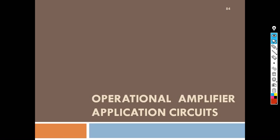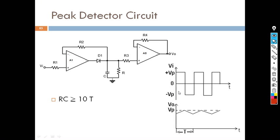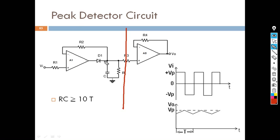We will now see the first application — how the peak detector works. This is the diagram for the peak detector. The circuit contains an operational amplifier with a resistor, a diode, a capacitor, and another resistor. That resistor is used for discharging. Other than that, we have one resistor in the feedback path.